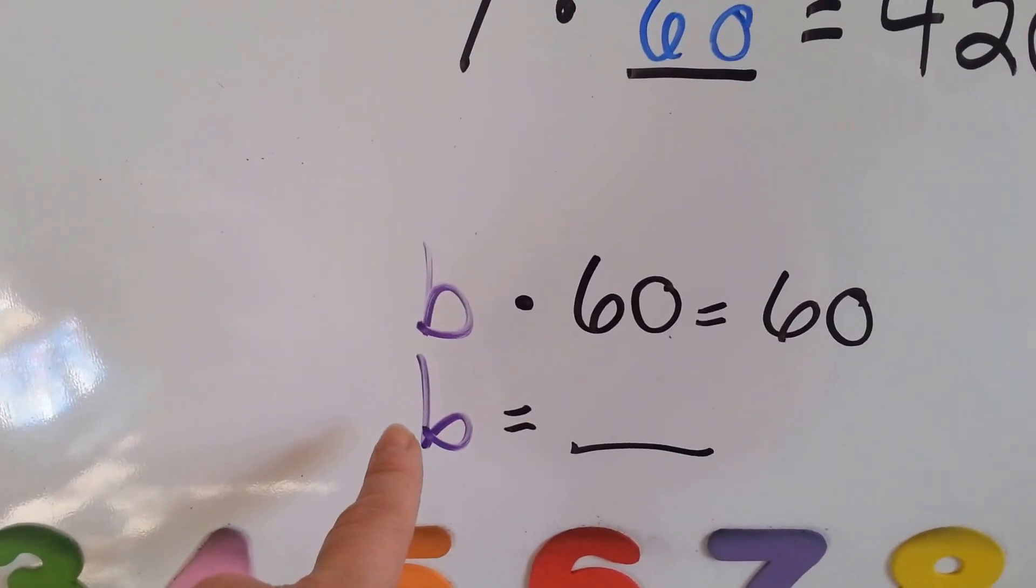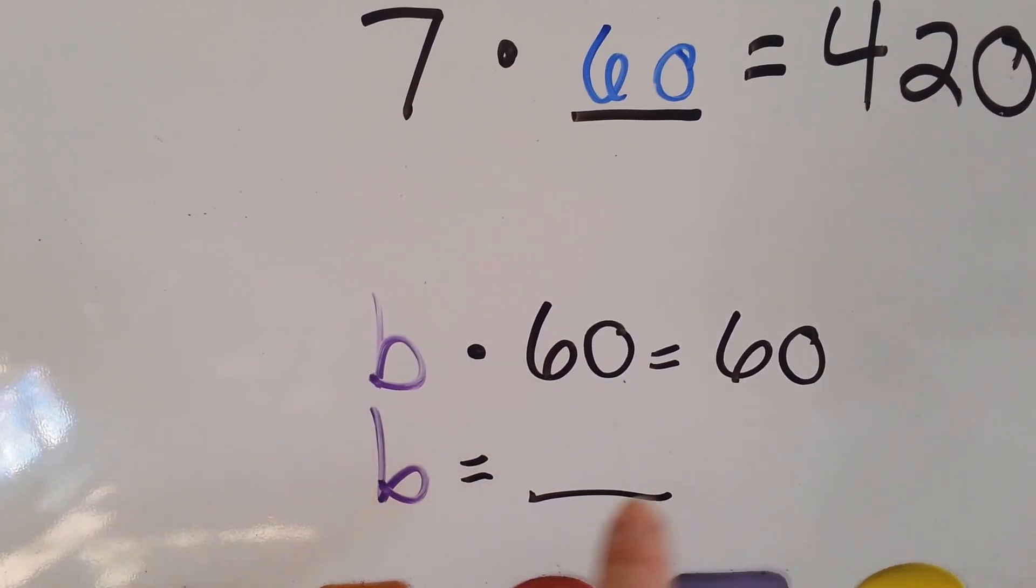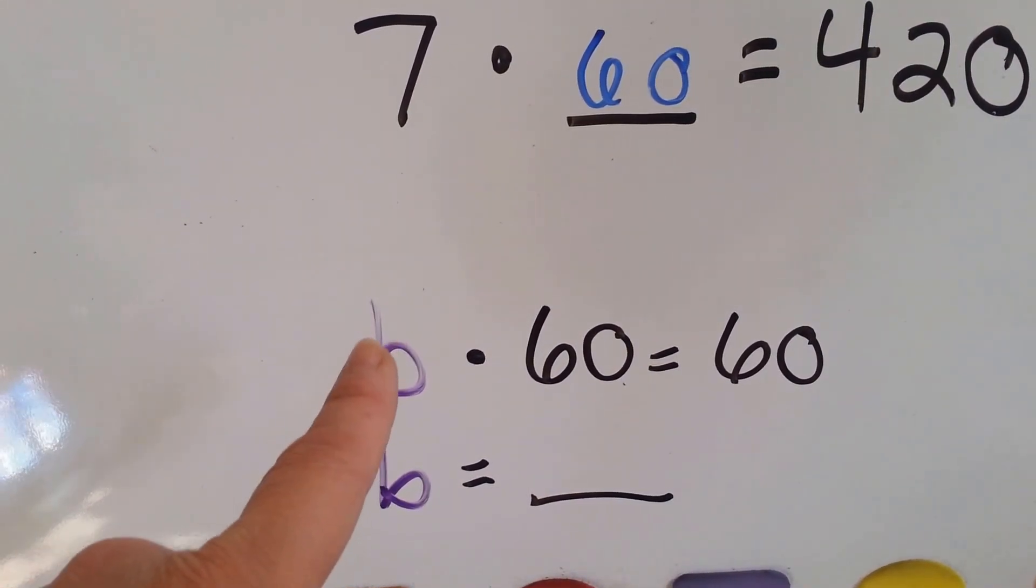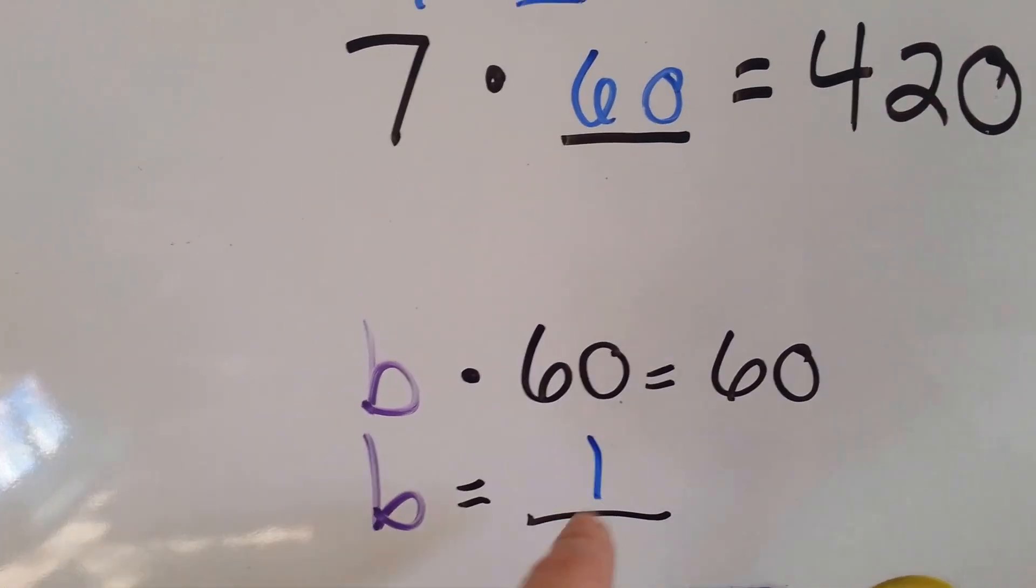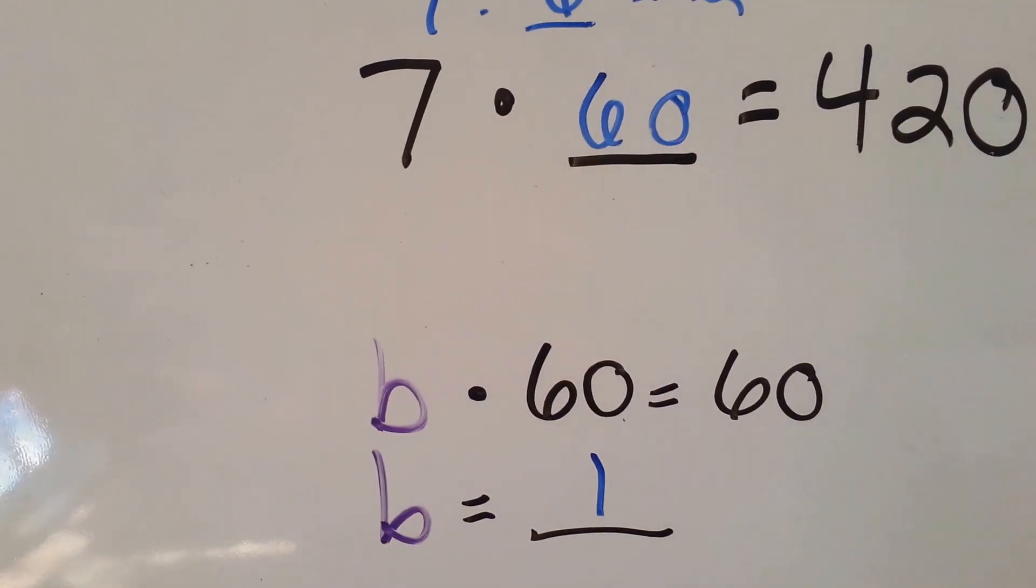How about here? b times 60 equals 60. Do you remember the identity rule? That whatever number is multiplied by 1, the number keeps its name. So b is equal to 1.